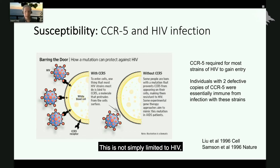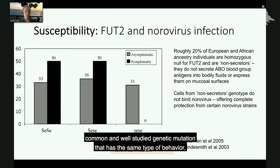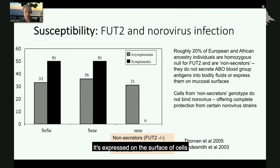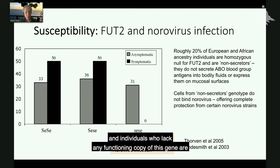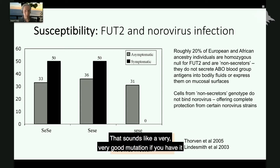This is not simply limited to HIV — we have many examples. For example, there's actually a very common and well-studied genetic mutation that has the same type of behavior. It's expressed on the surface of cells, and individuals who lack any functioning copy of this gene are actually completely protected from certain strains of norovirus infection. That sounds like a very, very good mutation if you have it.